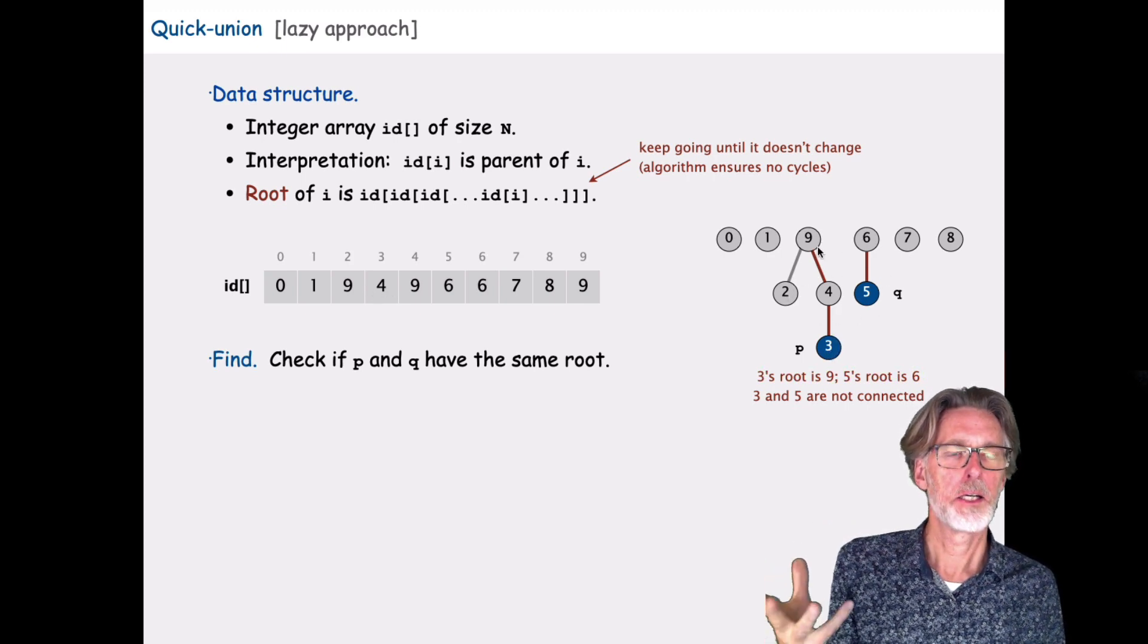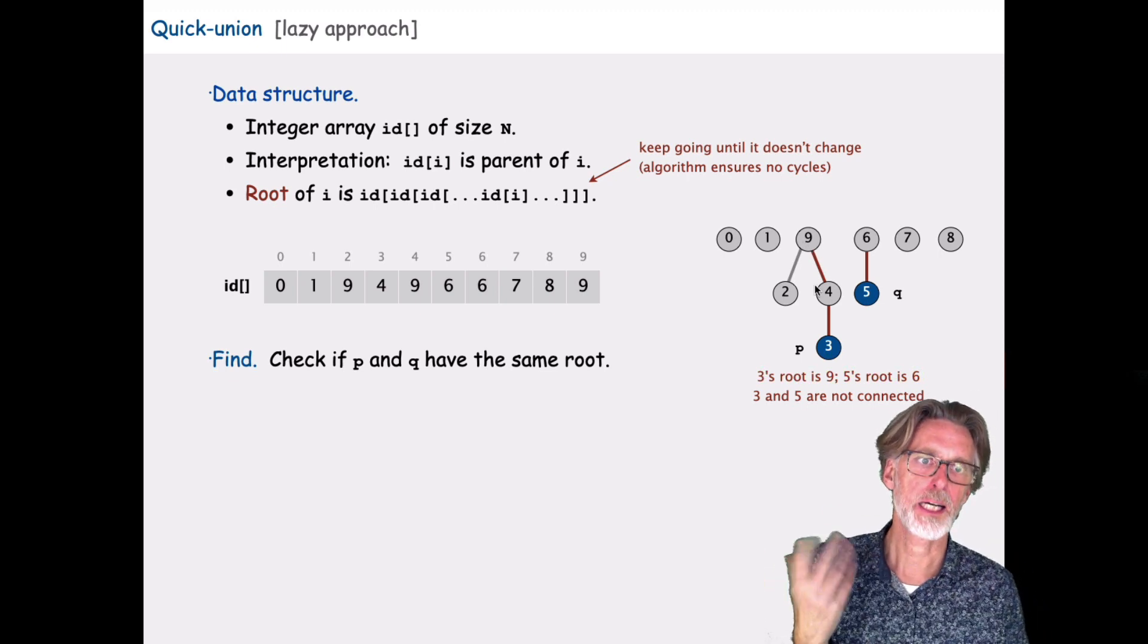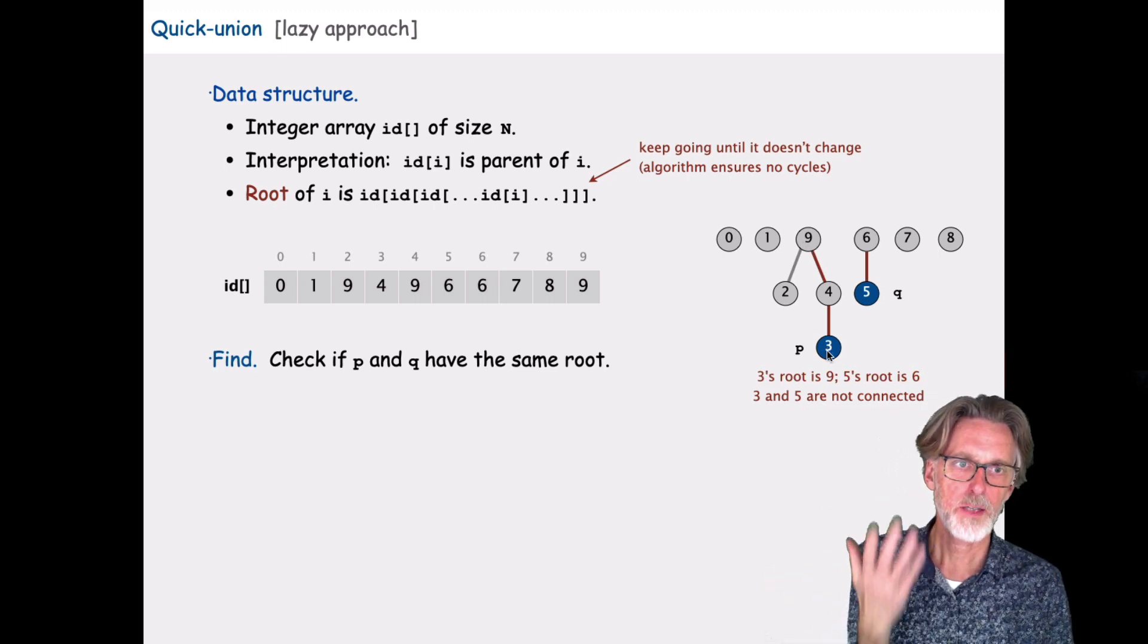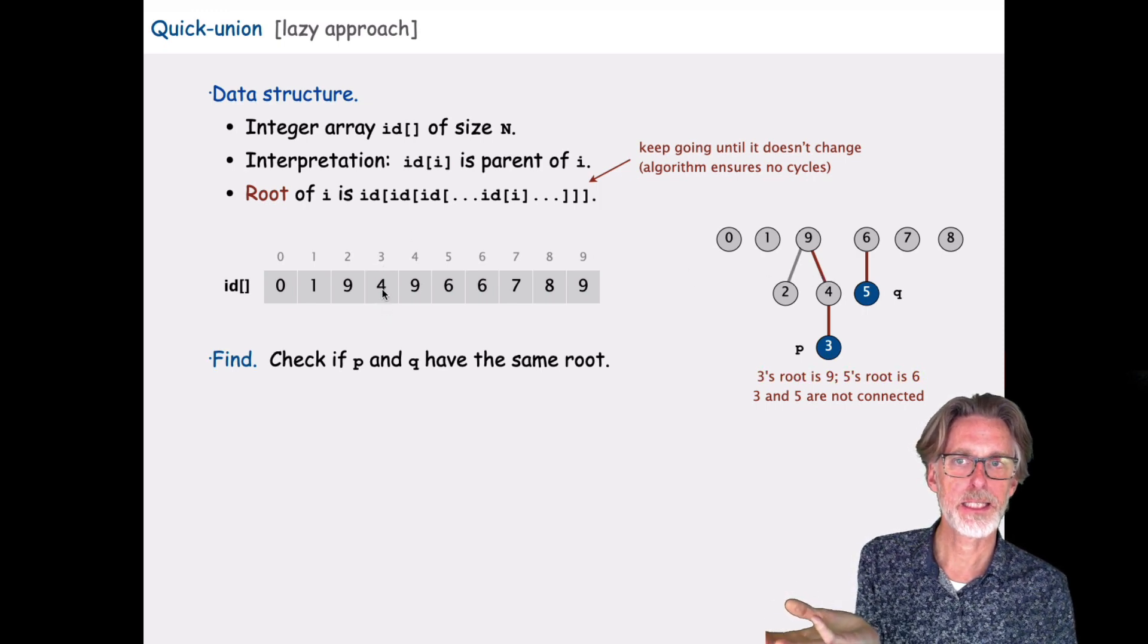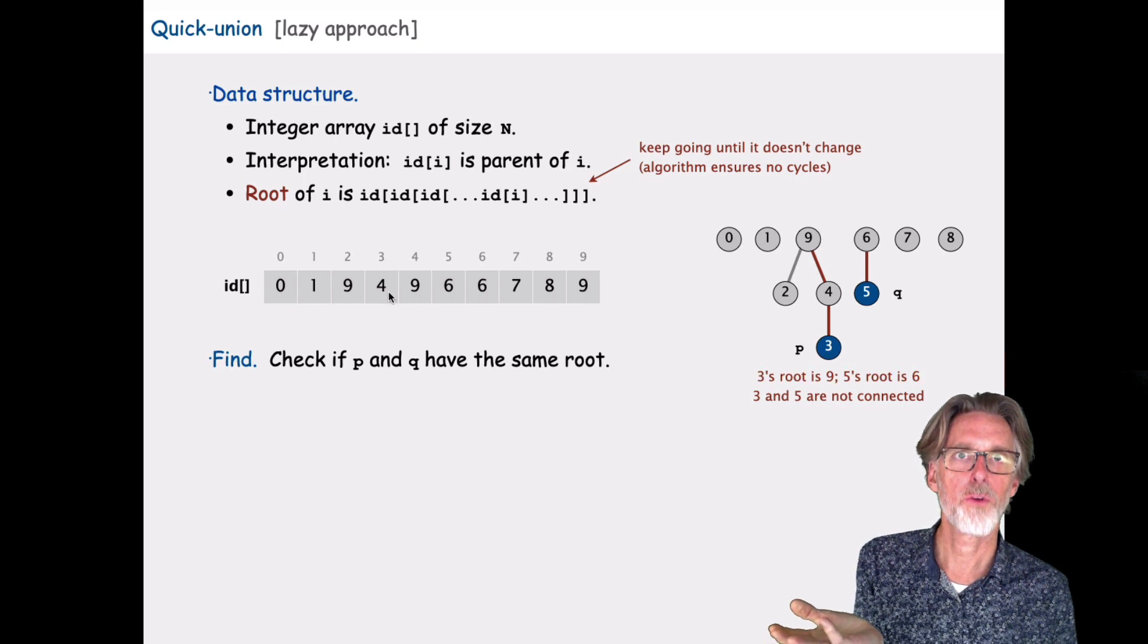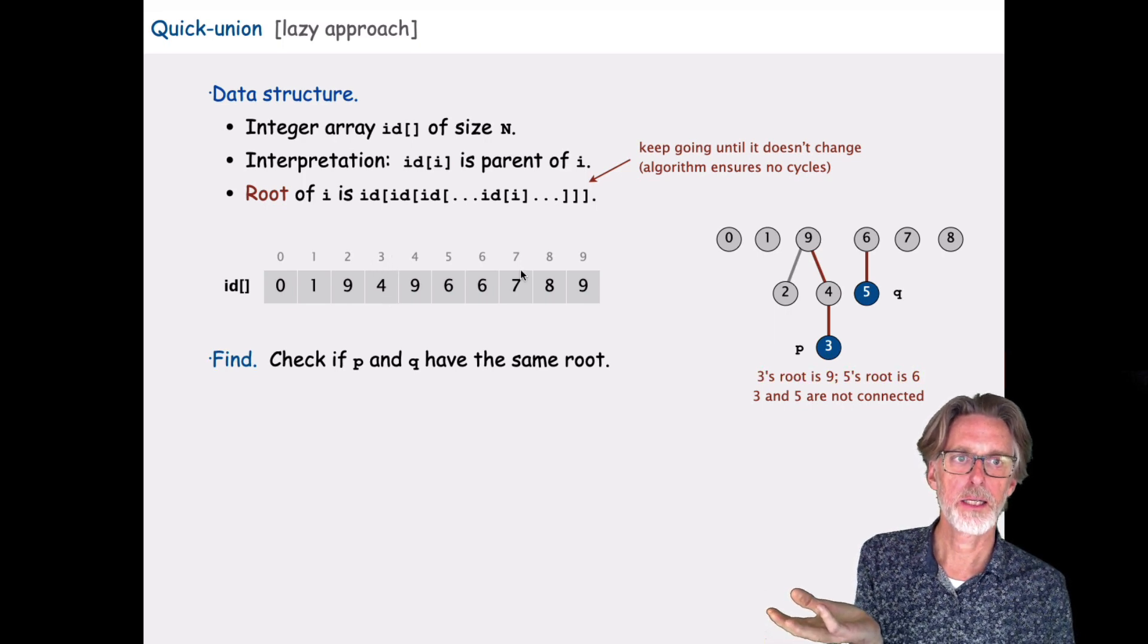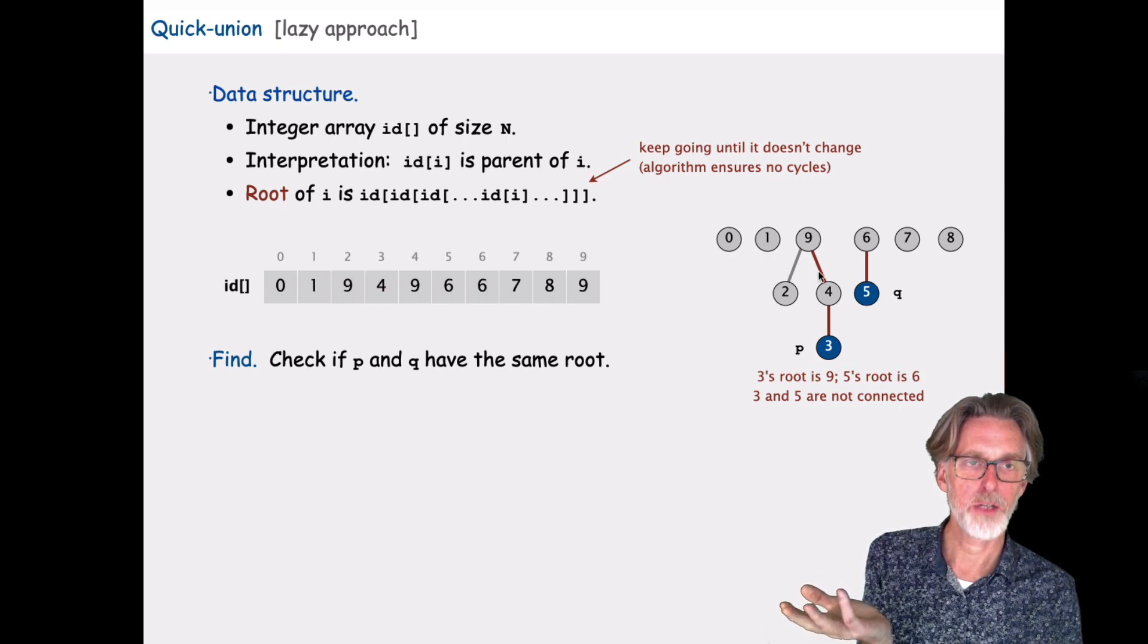Here we have 0 who is by itself, 1 is by itself. You can see here 9, 2, 4, and 3 are all connected. But instead of all of them having a single champion, 9, you can see here that 3 has the champion 4. So element 3 has value 4 in this array, whereas 2 and 4 and 9 all have the value 9.